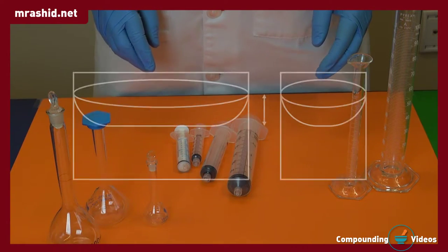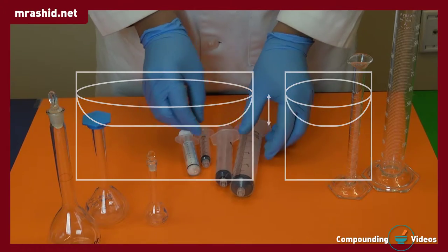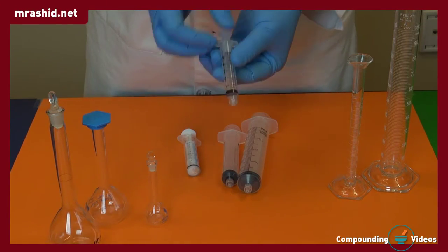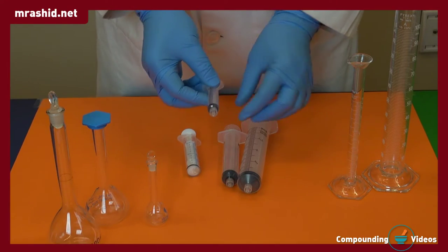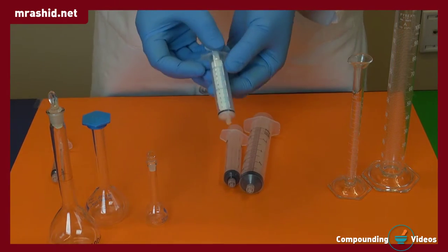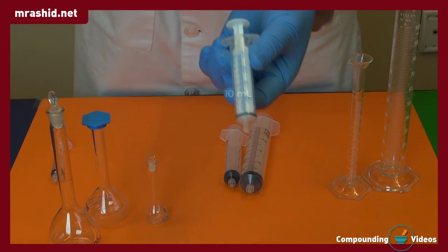Syringes may also be used for measuring liquid. This one is 5ml, which we cannot use for our desired 10ml of volume. This one is 10ml. Here are the graduation marks, and it can be used with precision.